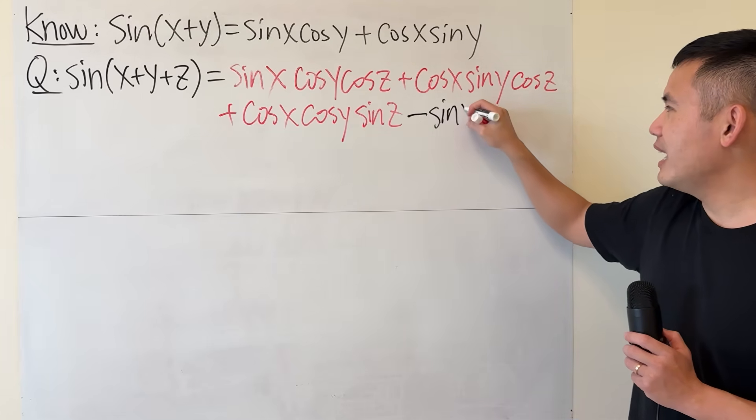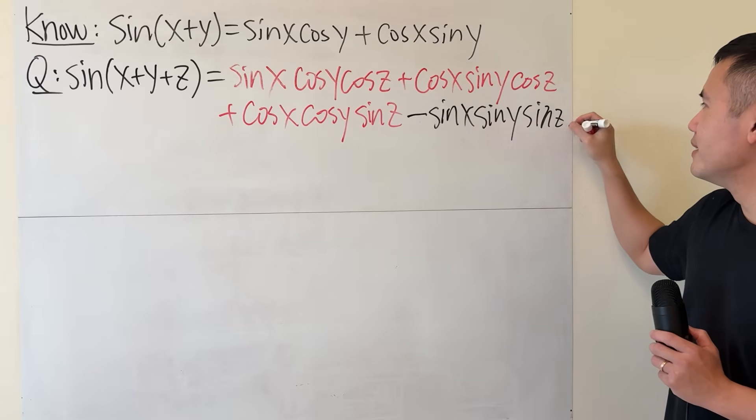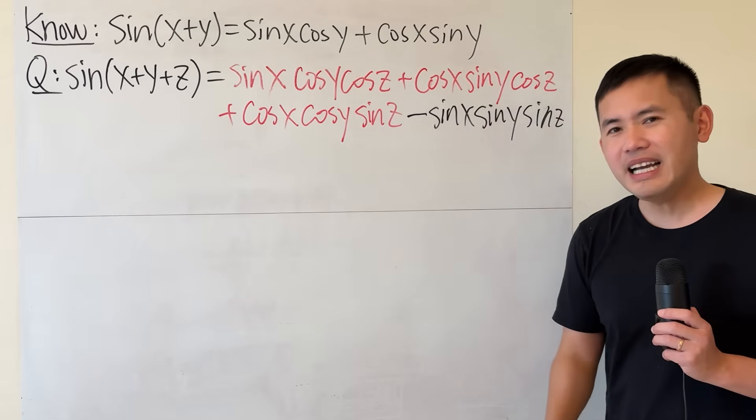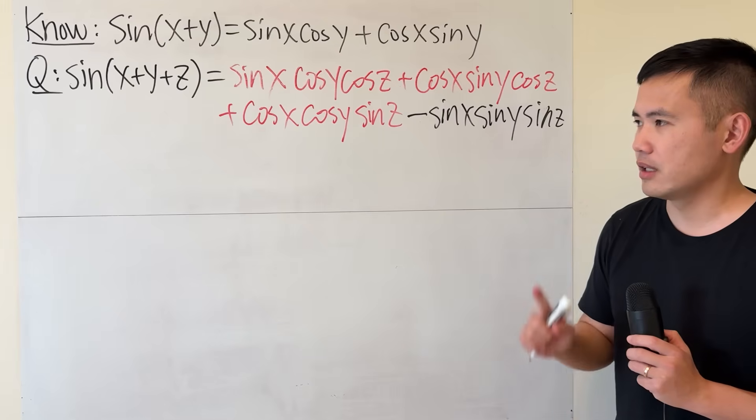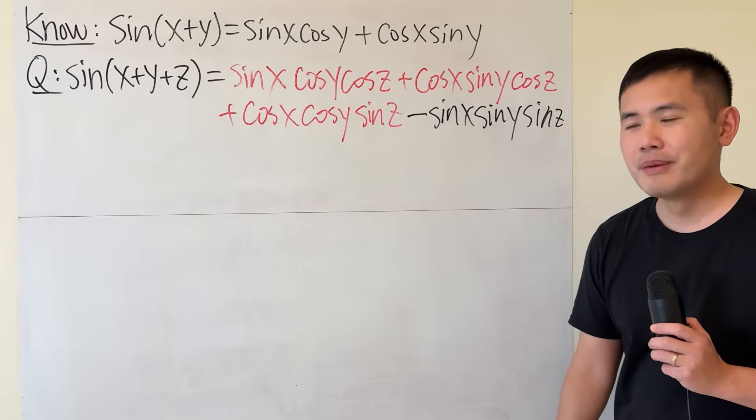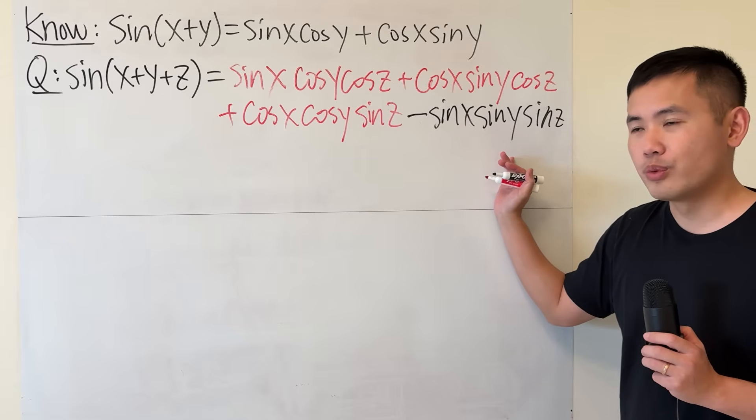And you think we are done? No, here at the end we are going to subtract sine x sine y and sine z, which is very nice. And I know you are thinking, what if we have four of them? Boy, the answer is not so nice. You guys can take a look right here. But anyways, I wanted to show you guys why this is true, so here is a quick proof for it.